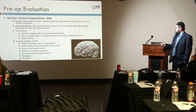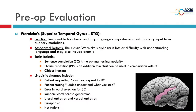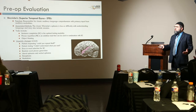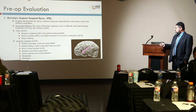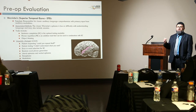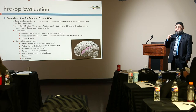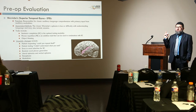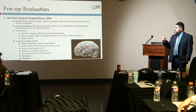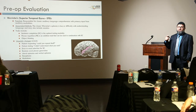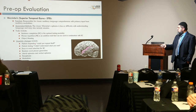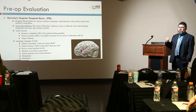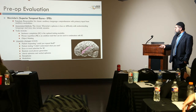The superior temporal gyrus (STG) is responsible for classic auditory language comprehension, with primary input from the auditory modality. If you ask the patient to complete a sentence, repeat a phrase, or name an object by hearing it, they won't be able to — because the auditory feedback is disrupted. But if you show them a picture, they can identify it using visual feedback. The patient may say, 'Could you repeat that?' or 'I didn't understand what you're saying,' or they'll select the wrong word.